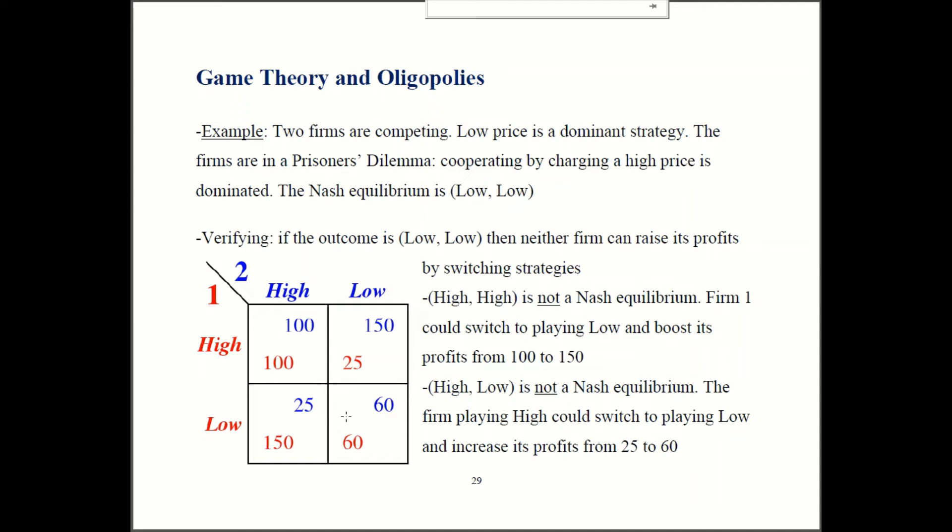So we established that neither firm wants to deviate. So this outcome is stable, low-low. So that's going to be a Nash equilibrium.